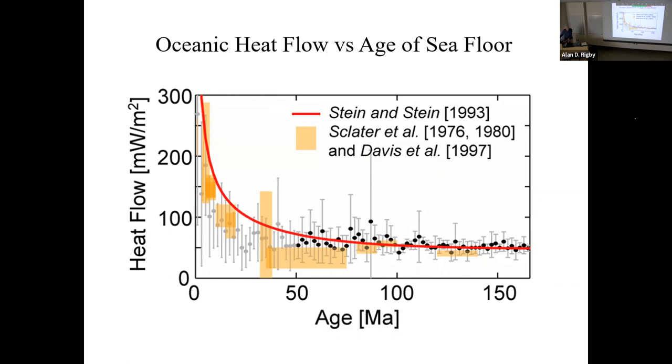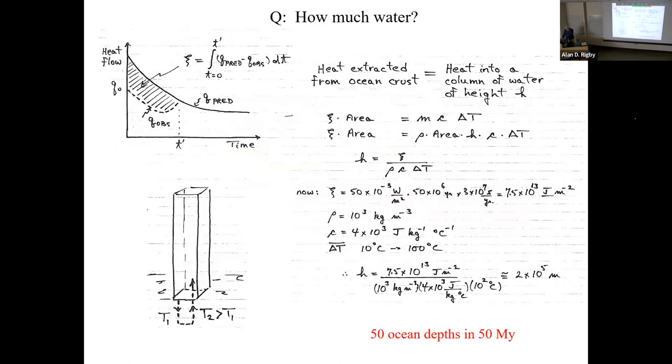Clive Lister was working on the Juan de Fuca Ridge with graduate student Earl Davis. He found that low heat flow values were because water was circulating into the crust, mining the heat, coming out where you couldn't measure it on topographic highs. Therefore, the difference between measured and predicted heat flow was a measure of how much water was mining this heat.